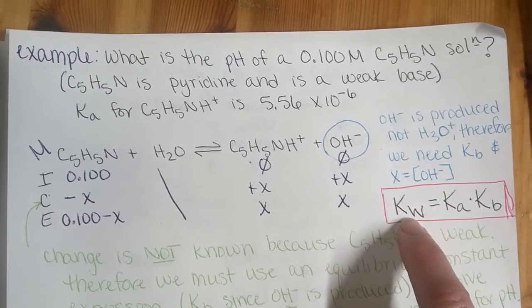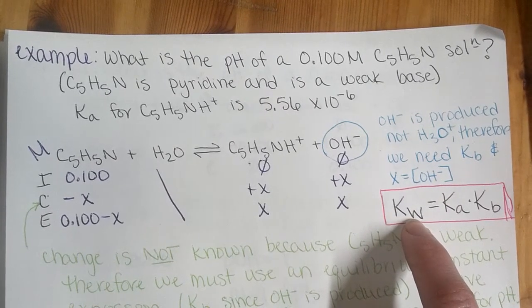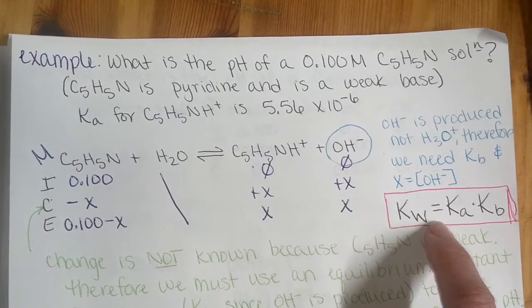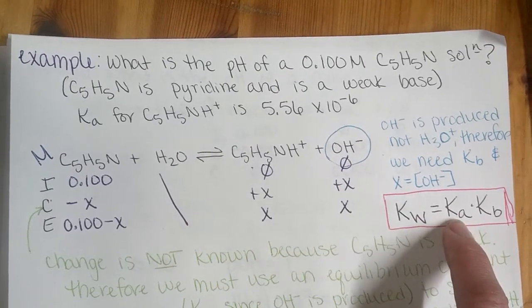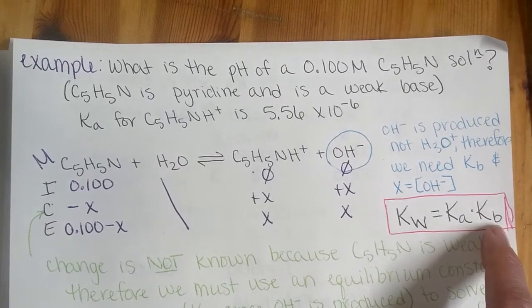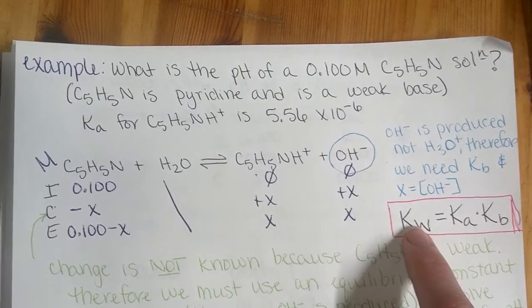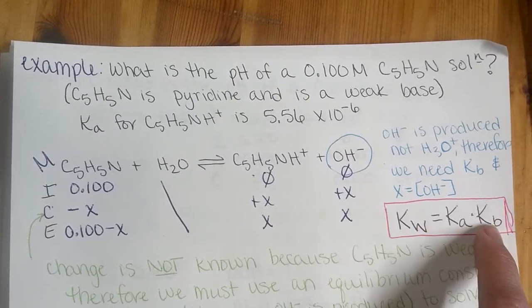But Kw, the equilibrium constant for water, remember 1.0 times 10 to the negative 14, is equal to the equilibrium constant for the acid times the equilibrium constant of the base. So when we're given Ka, we know what Kw is, so we can solve for Kb.